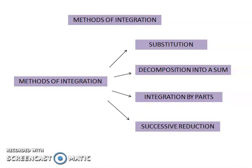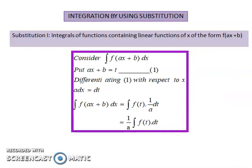The first method covers integrating functions which are in the linear form, that is, of the form f(ax + b). The substitution is given as ax + b = t. On differentiating, we get a·dx = dt, where b is a constant. Therefore, the integral of f(ax + b) dx reduces to (1/a) times the integral of f(t) dt, which is a simpler form.